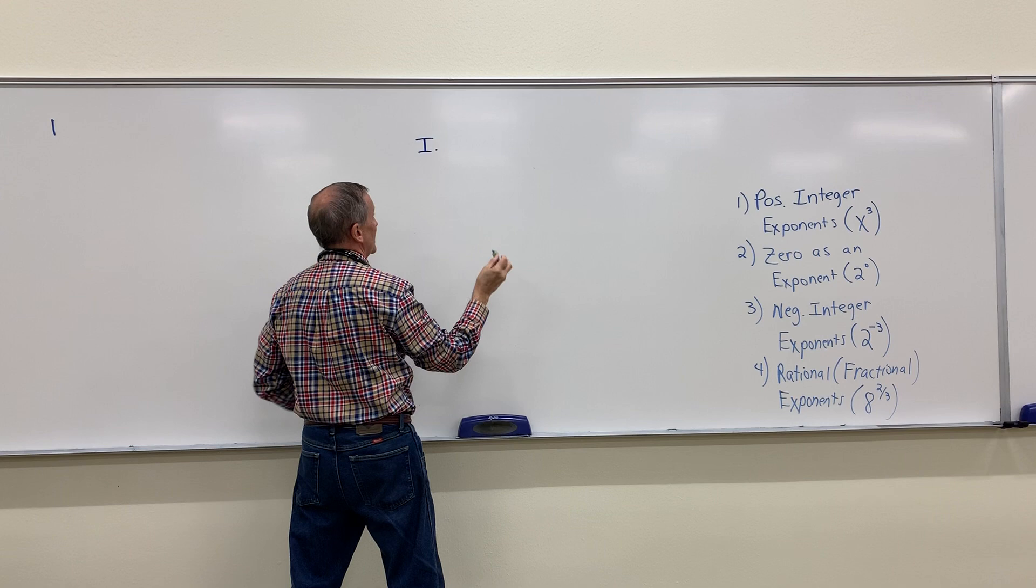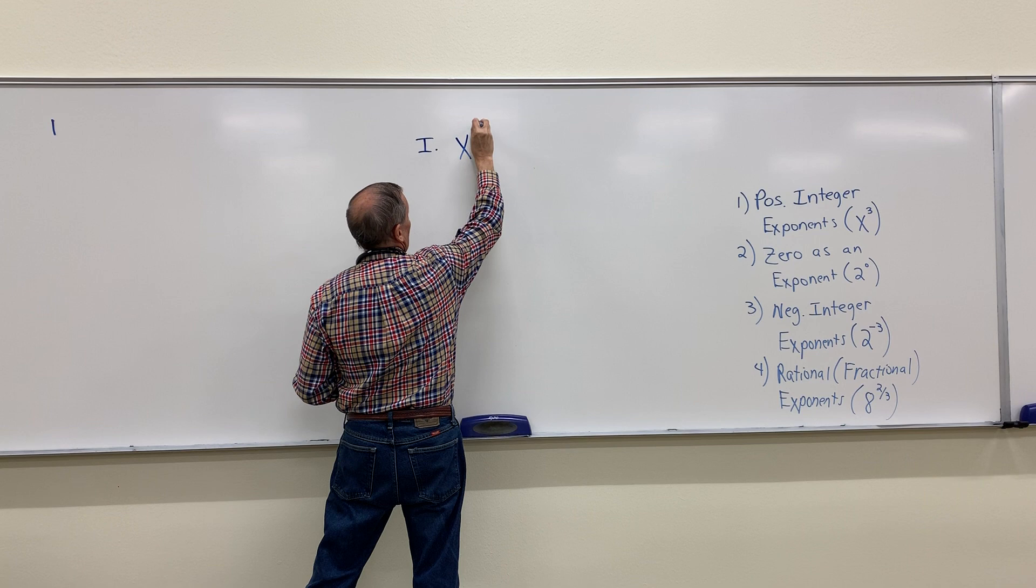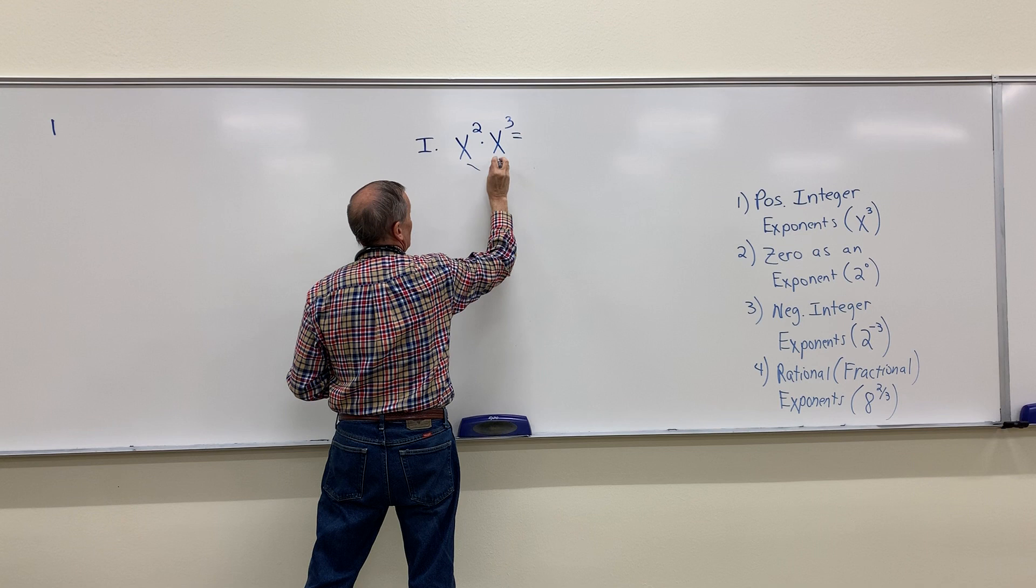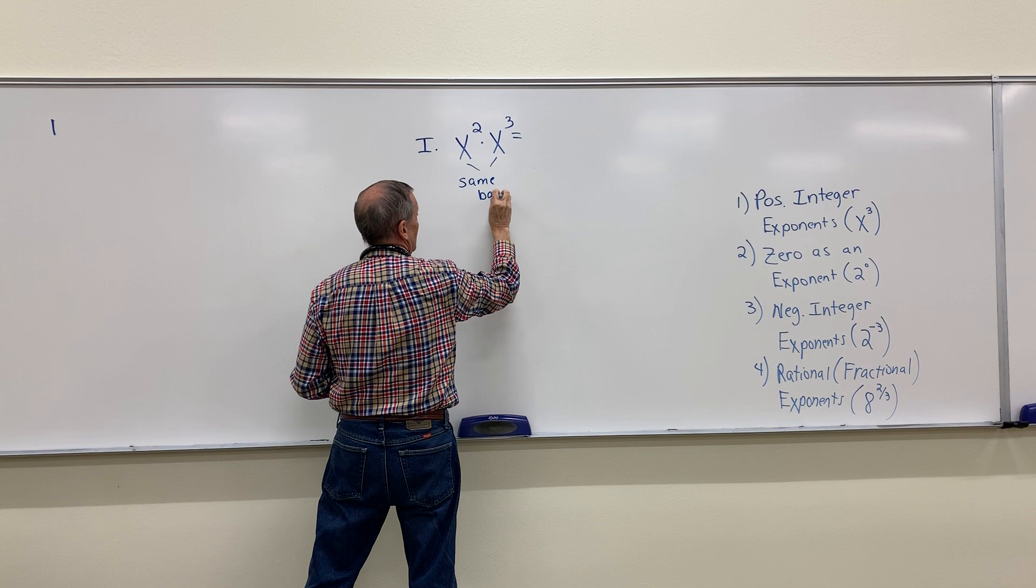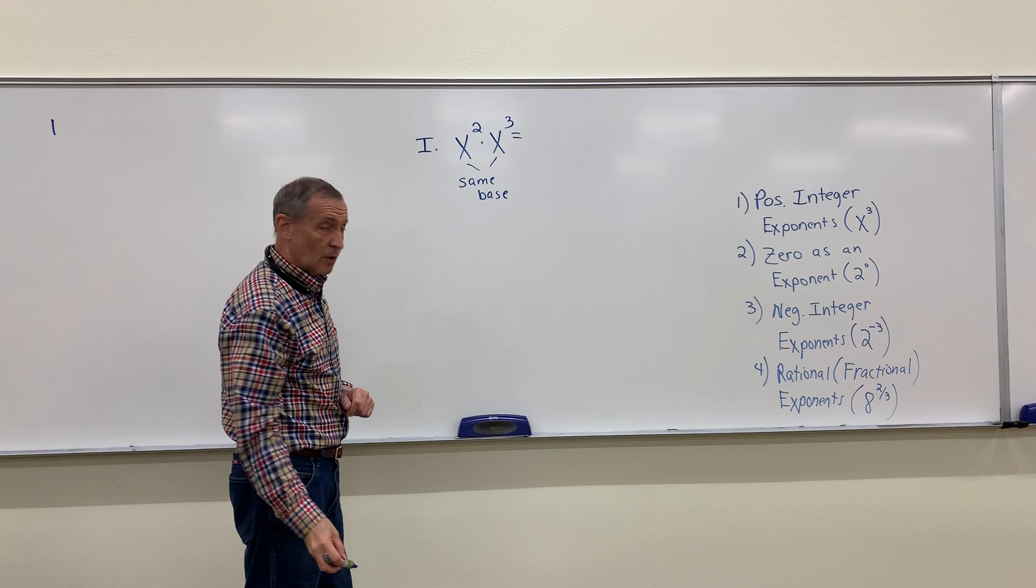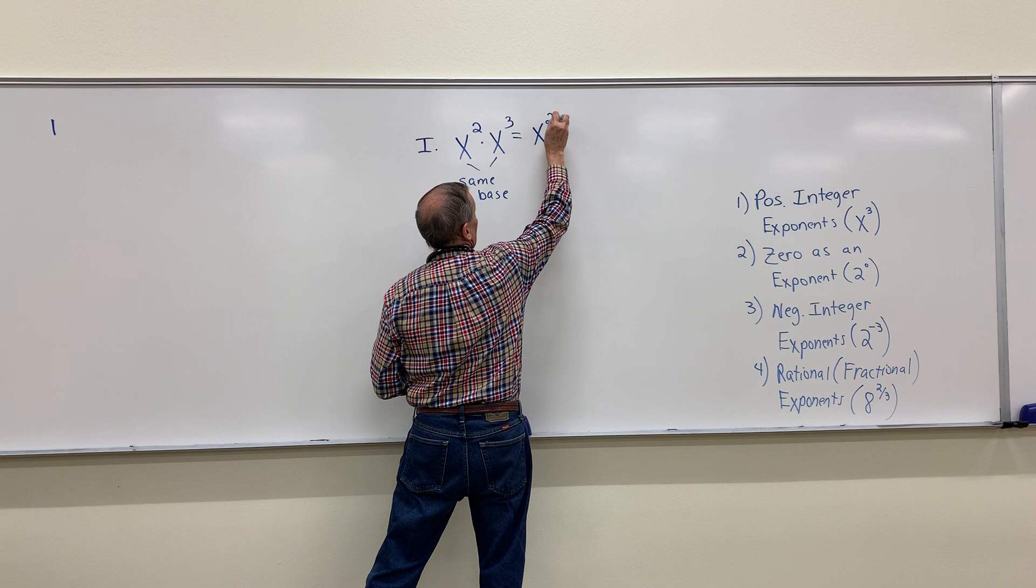Here's the first one. First property of exponents, and that is when I have the same base, and you guys are familiar with this guy. Please notice I have the same base here, and a multiplication problem. I have two factors, they have the same base. What do I do with those exponents? You know I add them together.